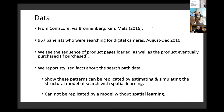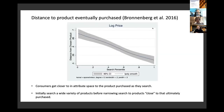We report stylized facts about these search path data, show we can replicate those patterns by estimating a structural model of search with spatial learning, and show those patterns cannot be rationalized without spatial learning. The first key pattern: the distance to the product eventually purchased declines over the search sequence. Consumers are getting closer in attribute space to the product they eventually purchase as they go through their searches - initially searching a wide variety before narrowing in.